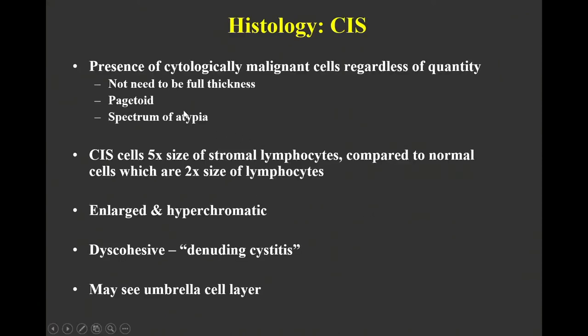The histology of CIS is any malignant cells, regardless of quantity. You don't apply the uterine cervical rules — you don't need full thickness involvement. You can have an umbrella cell layer, you can see pagetoid cells, and as I'll show, there is a spectrum of atypia.